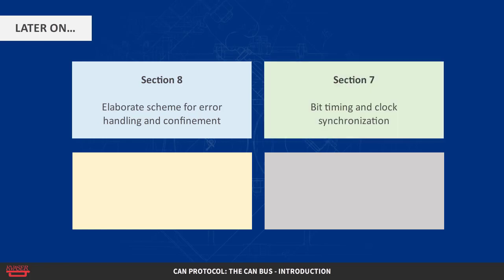Bit timing and clock synchronization are discussed in Section 7 of this material. We also provide a bit timing calculator that you can use to calculate the CAN bus parameters and register settings.